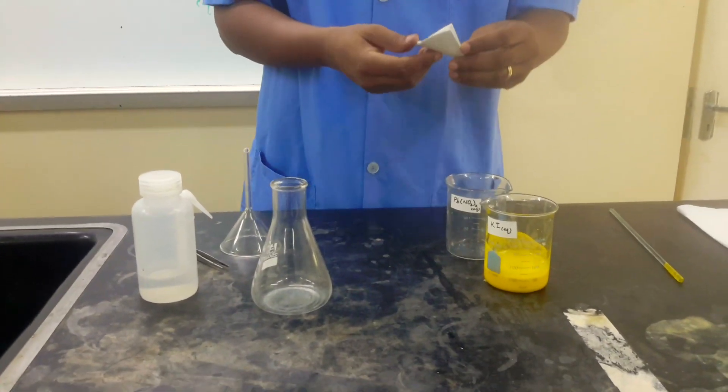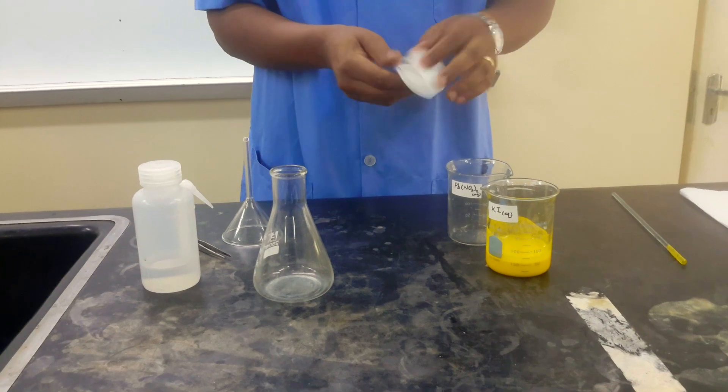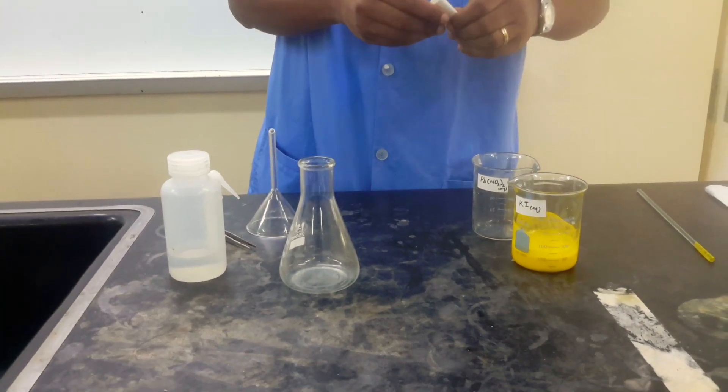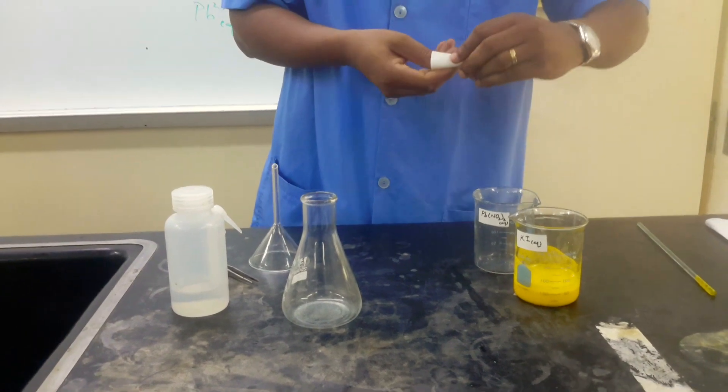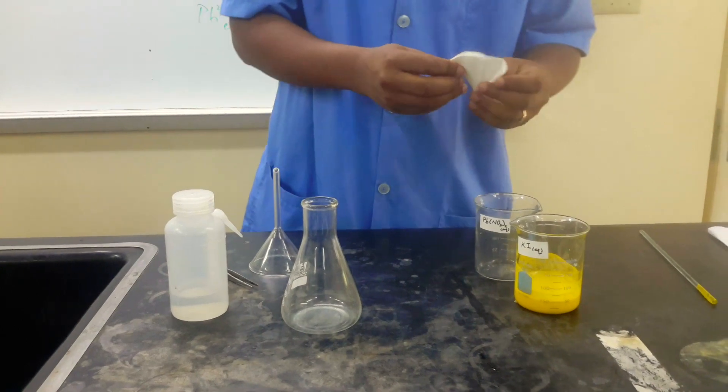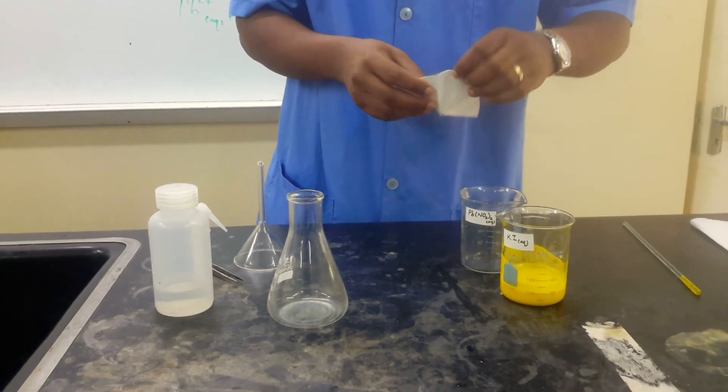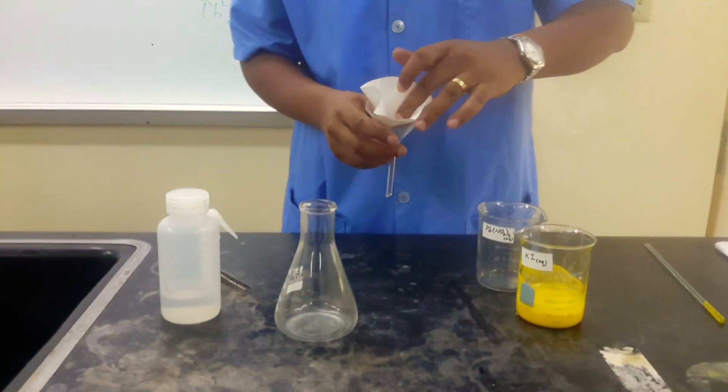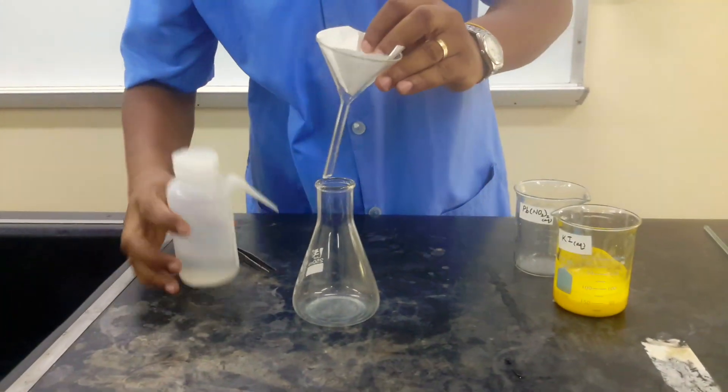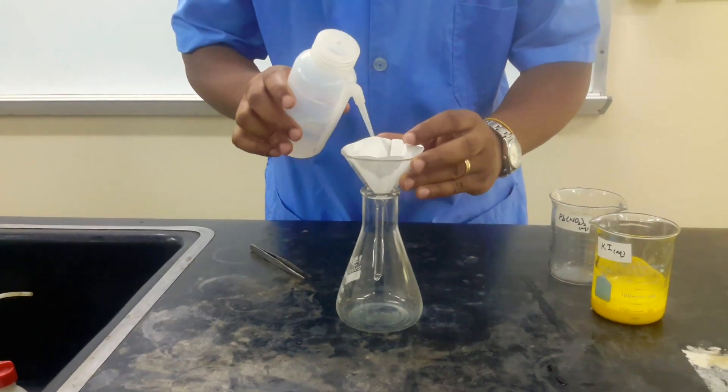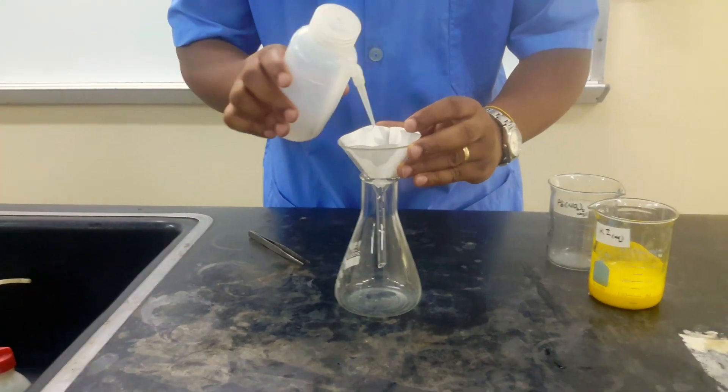So we need to have filter paper. Filter paper, we'll just fold it in half, then half again. And we can fold it in half again to fold it so we actually get a faster rate of filtration. Then we'll place this in our filter funnel, and we normally just spray it with water to help with the suction. And then pour.